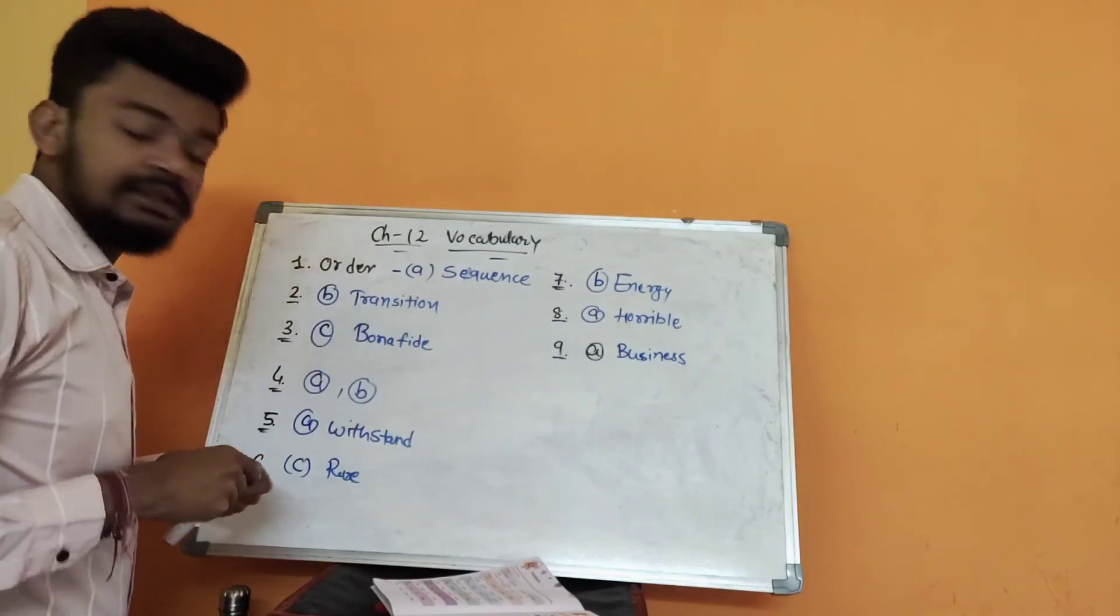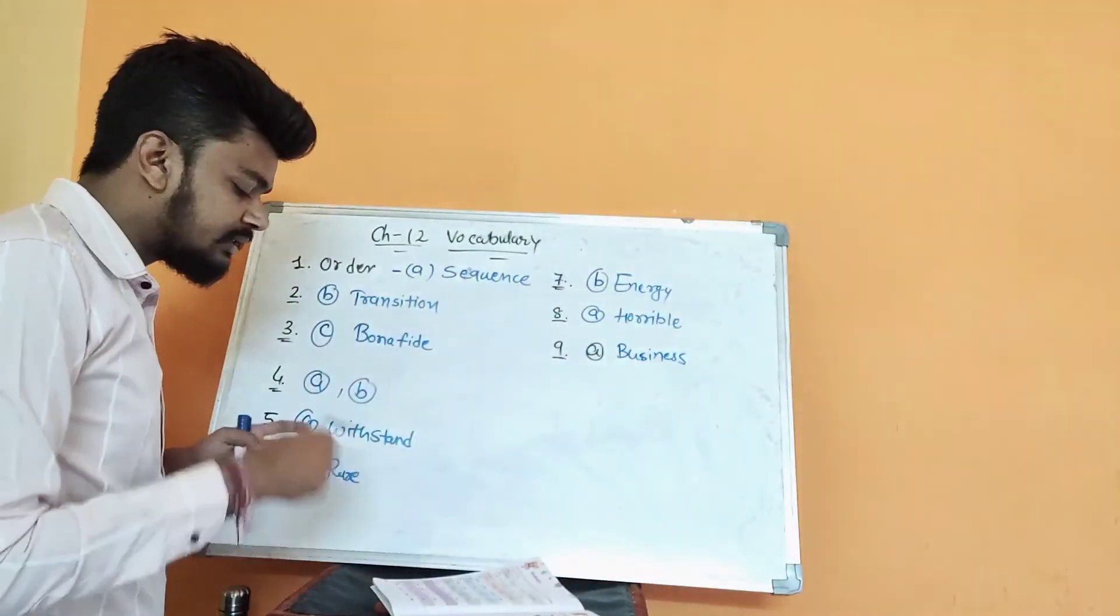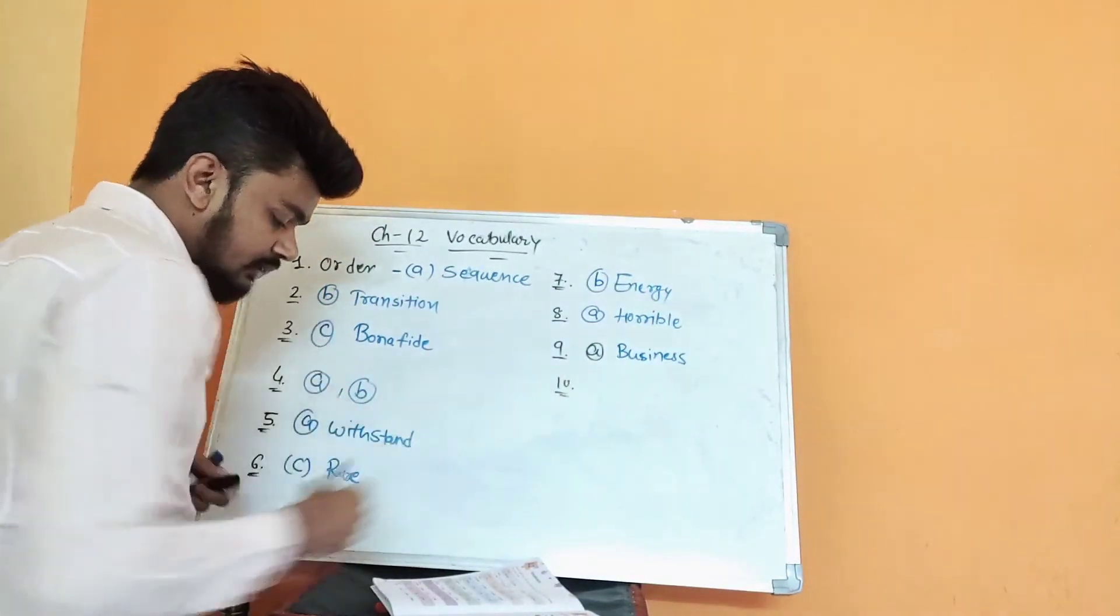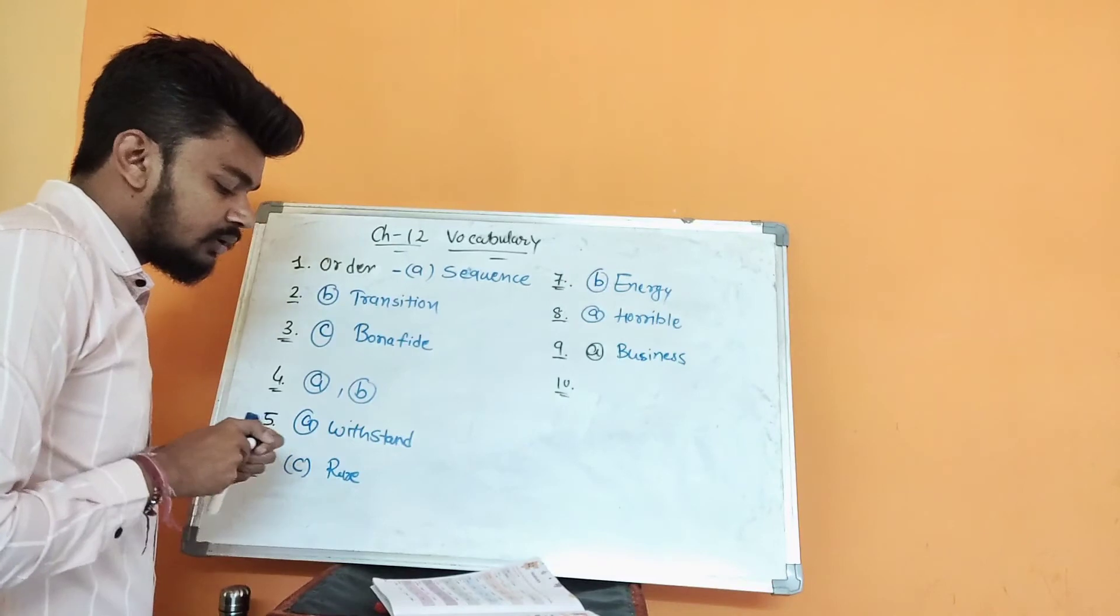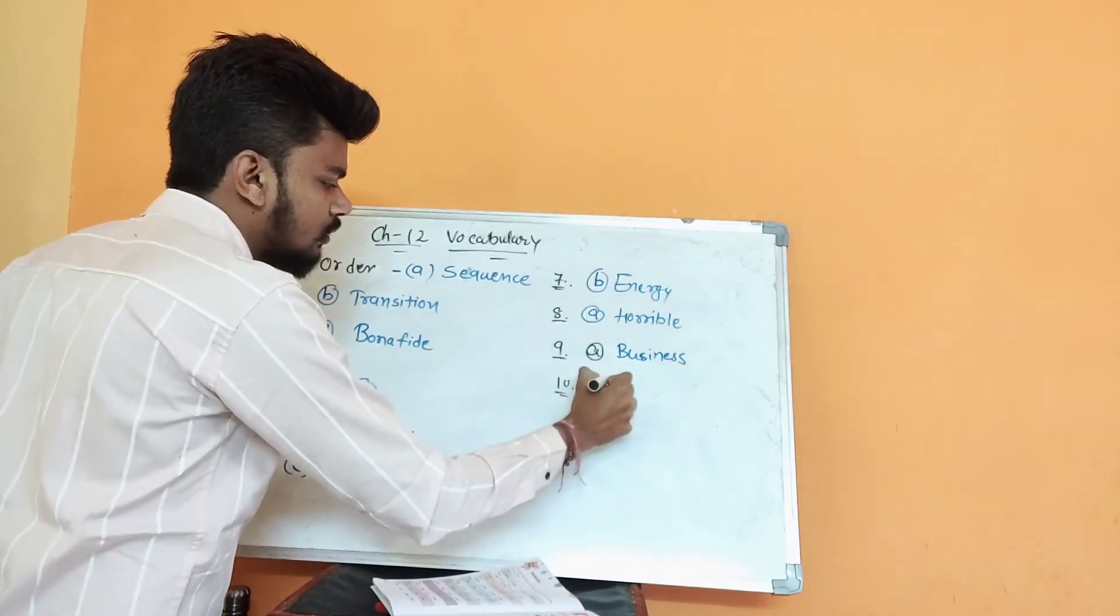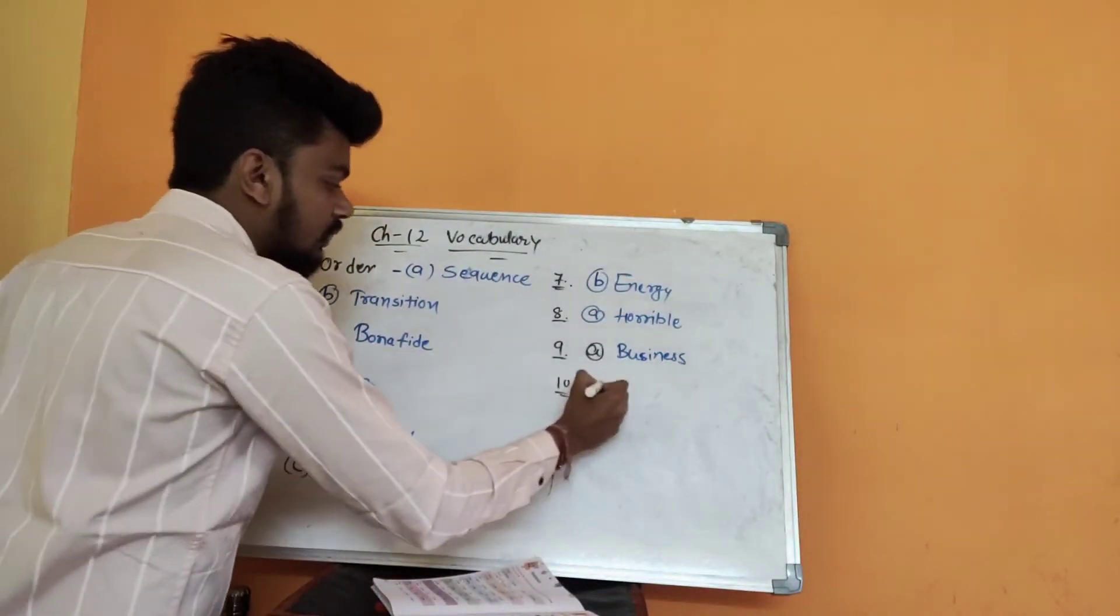Here it says back side has C as answer, but C is not correct. Next, question number ten: popular. Obviously, A, prominent. No need for explanation in this one.